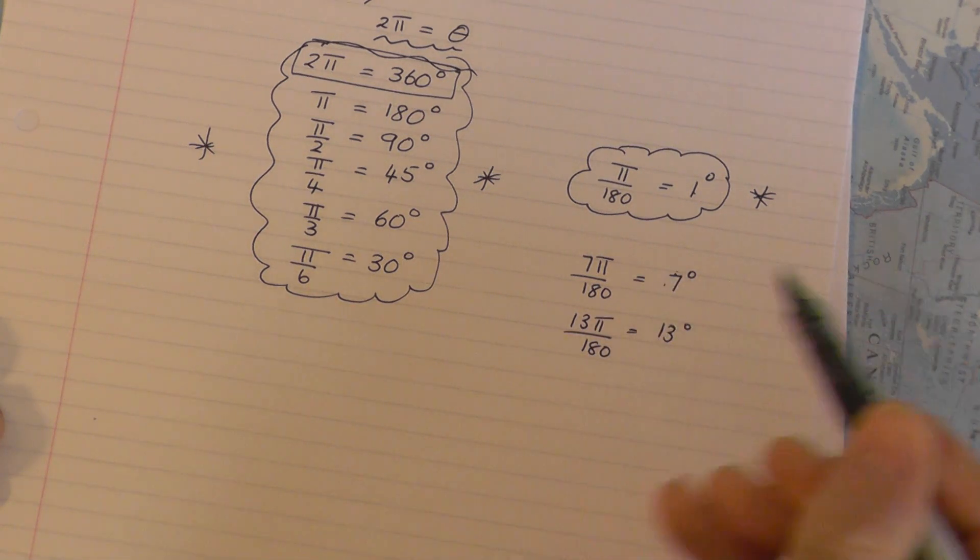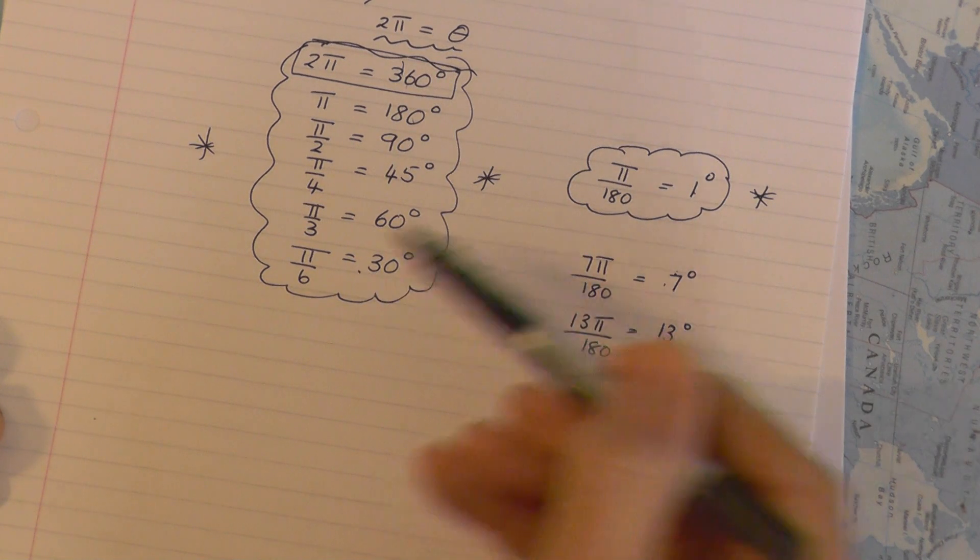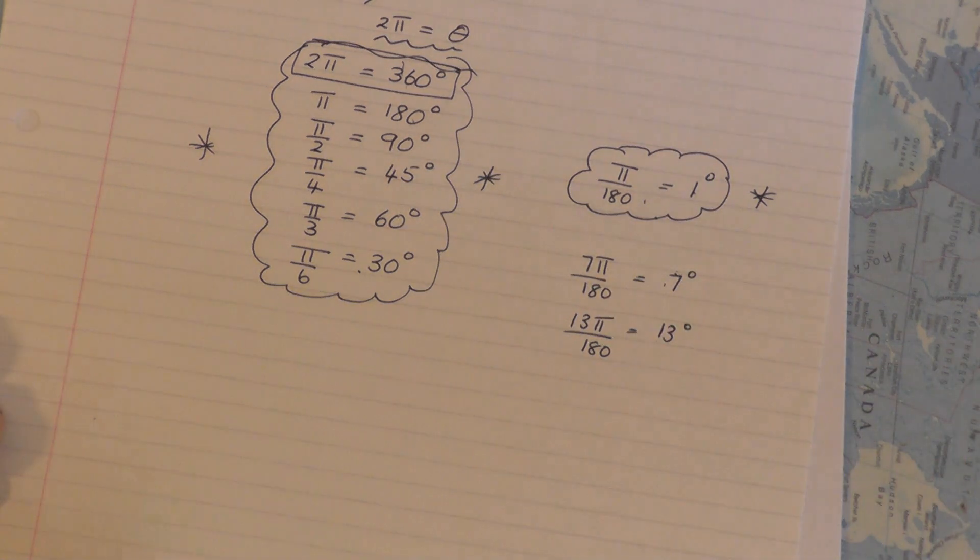Now these I wouldn't learn off by heart, I'd just learn those off by heart, know how to apply them, and I'd learn that off by heart. And you can always adapt that to get awkward angles such as 7 degrees, 13 degrees, 31 degrees or whatever.